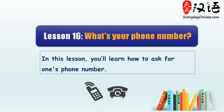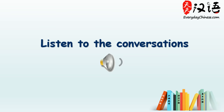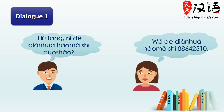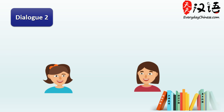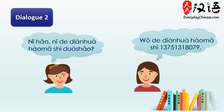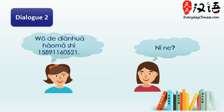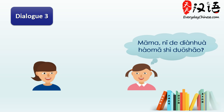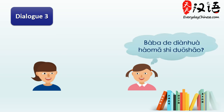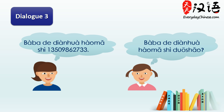First, check out today's conversations. My phone number is 137-5131-8079. My phone number is 1589-1160-521. 妈妈,你的电话号码是多少? 我的电话号码是137-1437-4800. 爸爸的电话号码是多少? 爸爸的电话号码是1350-9862733.